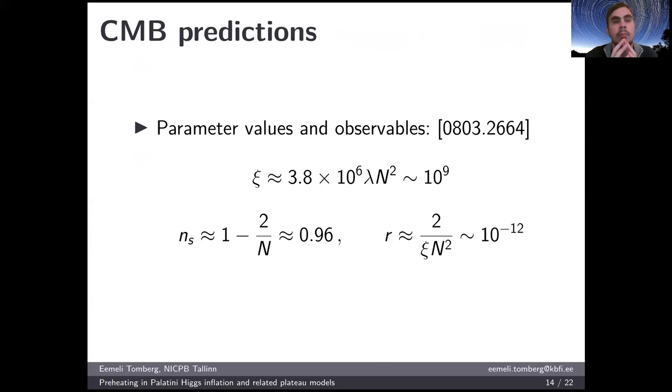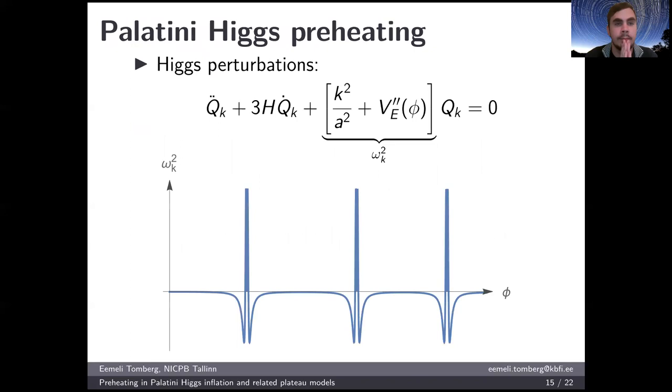A word on CMB predictions. This model is a typical plateau model, so that the prediction for this n_s parameter is 0.96, well consistent with the Planck data. The prediction for the tensor-to-scalar ratio is indeed suppressed by this large ξ value. ξ is large because it is fixed by the λ coupling and the normalization of the scalar perturbation at CMB.